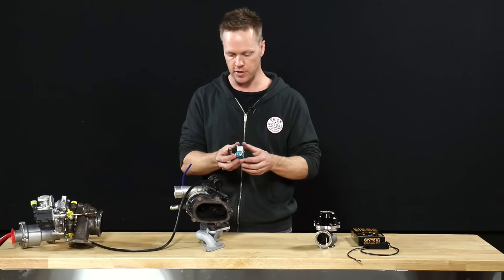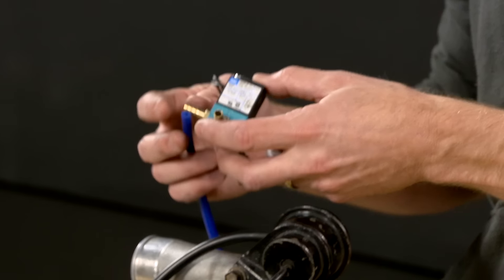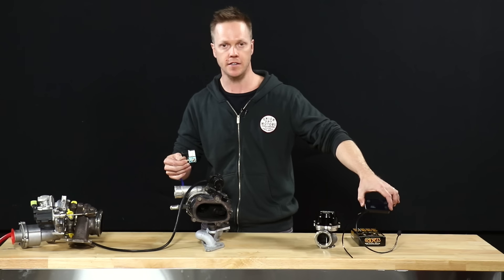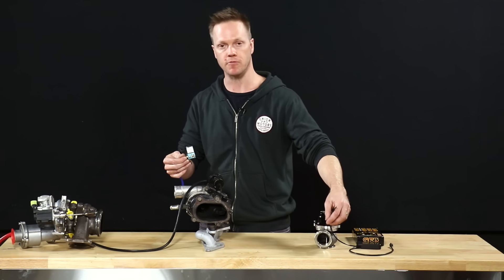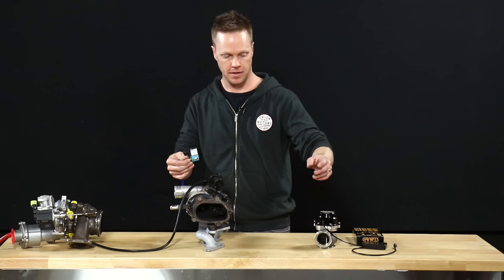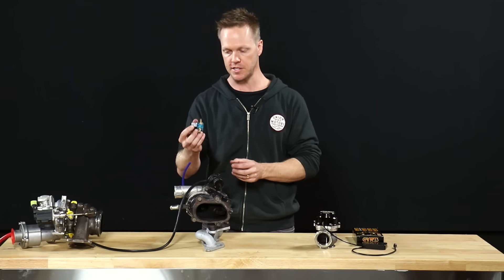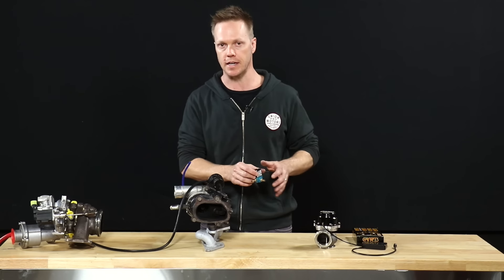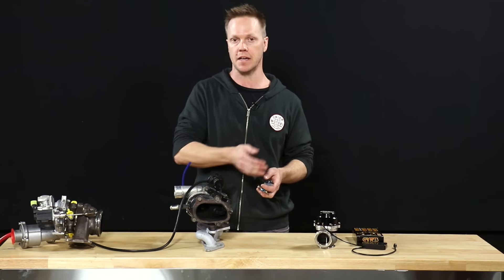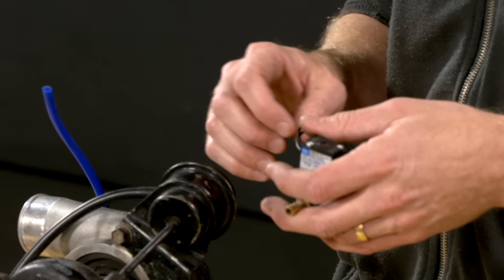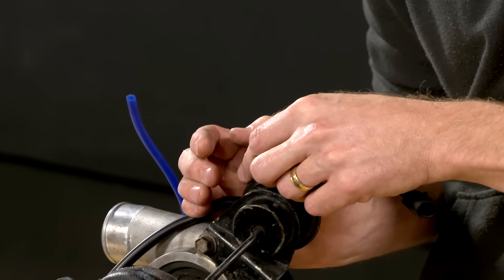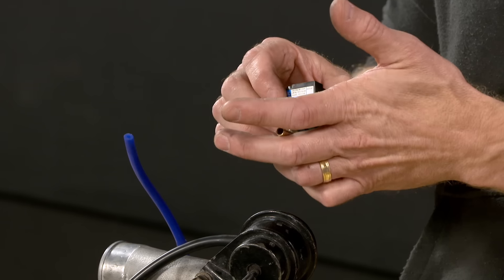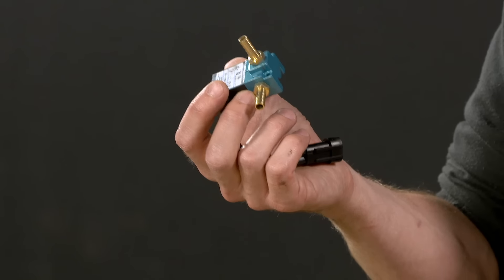You could also use an electronic boost controller, which does a similar thing, but this solenoid here is controlled by the head unit. Now the head unit will actually reference manifold pressure and then it will make decisions about how much to bleed out of the line based on what it's seeing and what you've actually set it up to do. So for example, you can make boost go higher, you can make it go lower, you can make it come on harder by holding the boost back from the actuator as the turbo's spooling up, so that will get it there faster. So that's where the advantages of the electronic control come in.